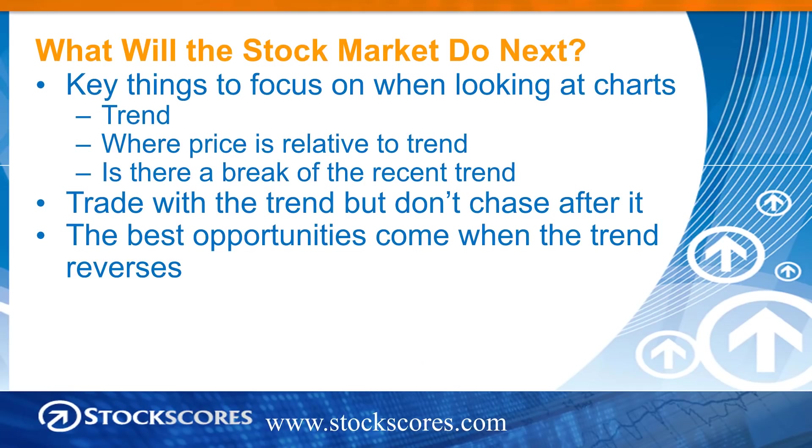This week's topic: what will the market do next? It's actually pretty simple. Generally speaking, you want to trade with the trend. You first have to define what the trend is, and then look at where price is relative to the trend. If price runs up and away from an upward trend, it's probably going to pull back. If you're in a downward trend and you go down too fast, it's probably going to pull up. Ultimately, the best opportunities come when the trend is broken — if you can see what that trend reversal looks like, then you can start to do really well.